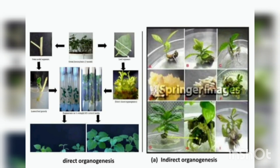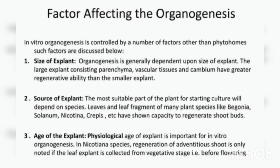The factors affecting organogenesis: the first is the size of the explant. Organogenesis directly depends upon the size of the explant. Larger explants, especially when consisting of tissues like parenchyma, vascular tissue, and cambium, have greater regenerative ability than smaller explants. The next factor is the source of the explant — the most suitable source depends upon the species, and leaf and leaf fragments show maximum regenerating capacity. The third factor is the age of the explant, where physiological age is very important for in vitro organogenesis.